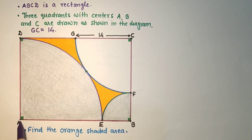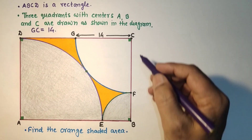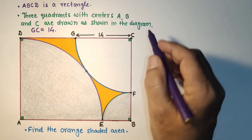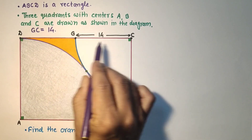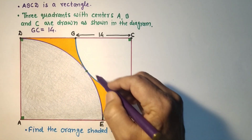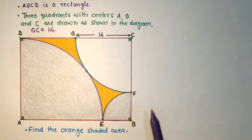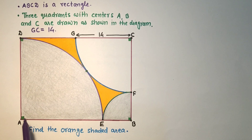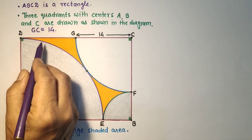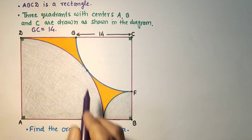This is the center of this quadrant, this is the center of this quadrant, and C vertex is the center of this quadrant whose radius is given as 14. Only one quadrant's radius is given and these two quadrants' radii are not given. So we have to find this orange shaded area.